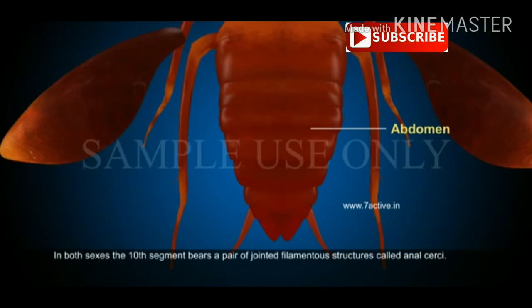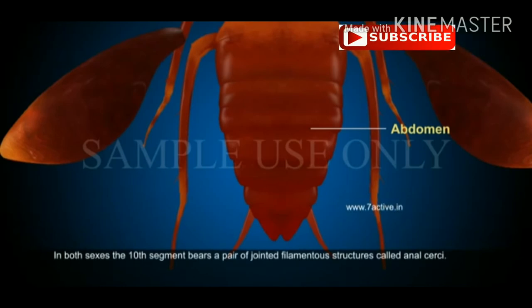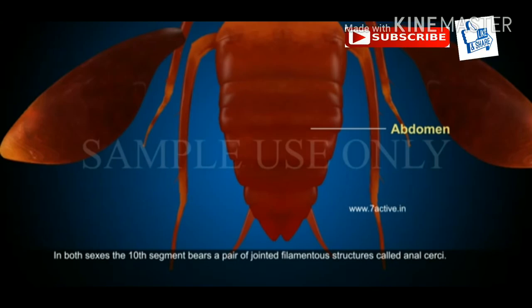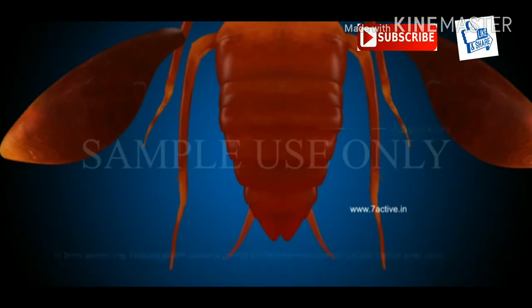In both sexes, the tenth segment bears a pair of jointed filamentous structures called anal cerci.